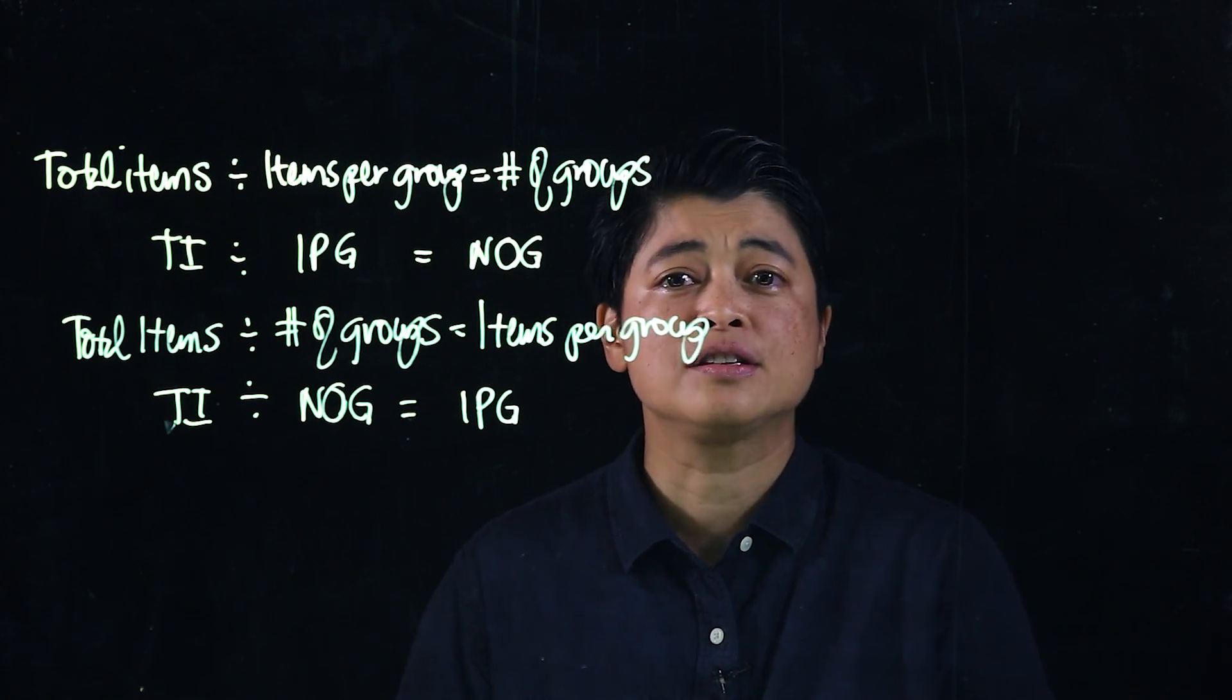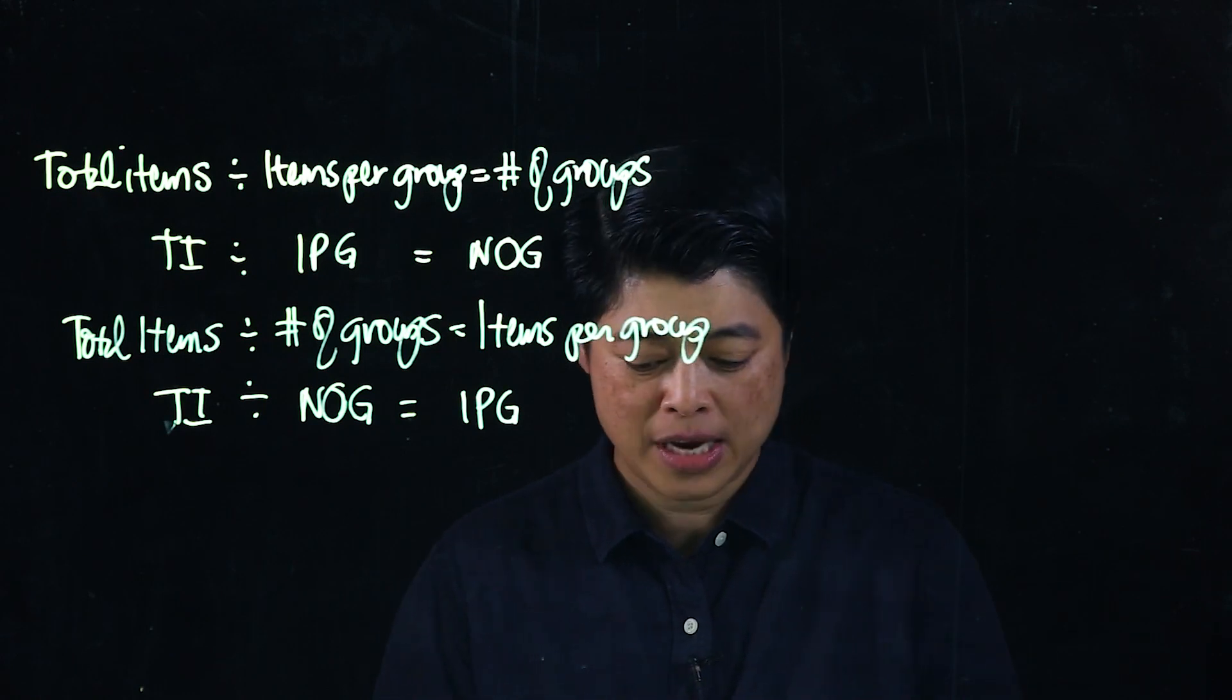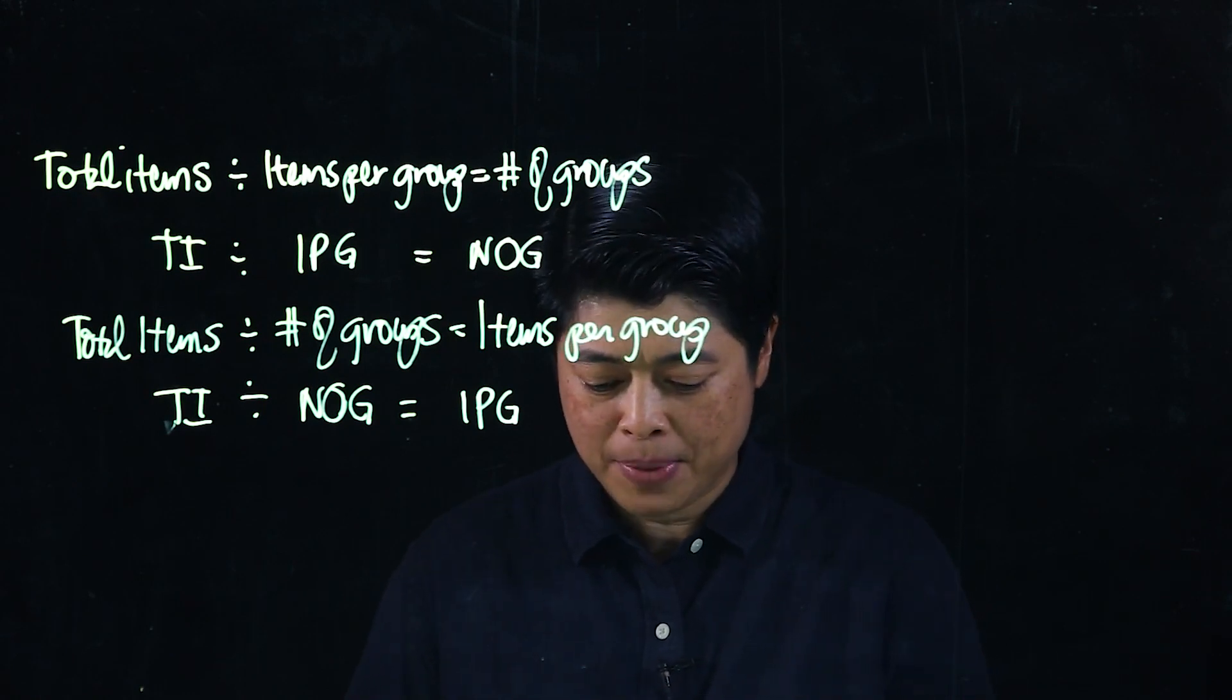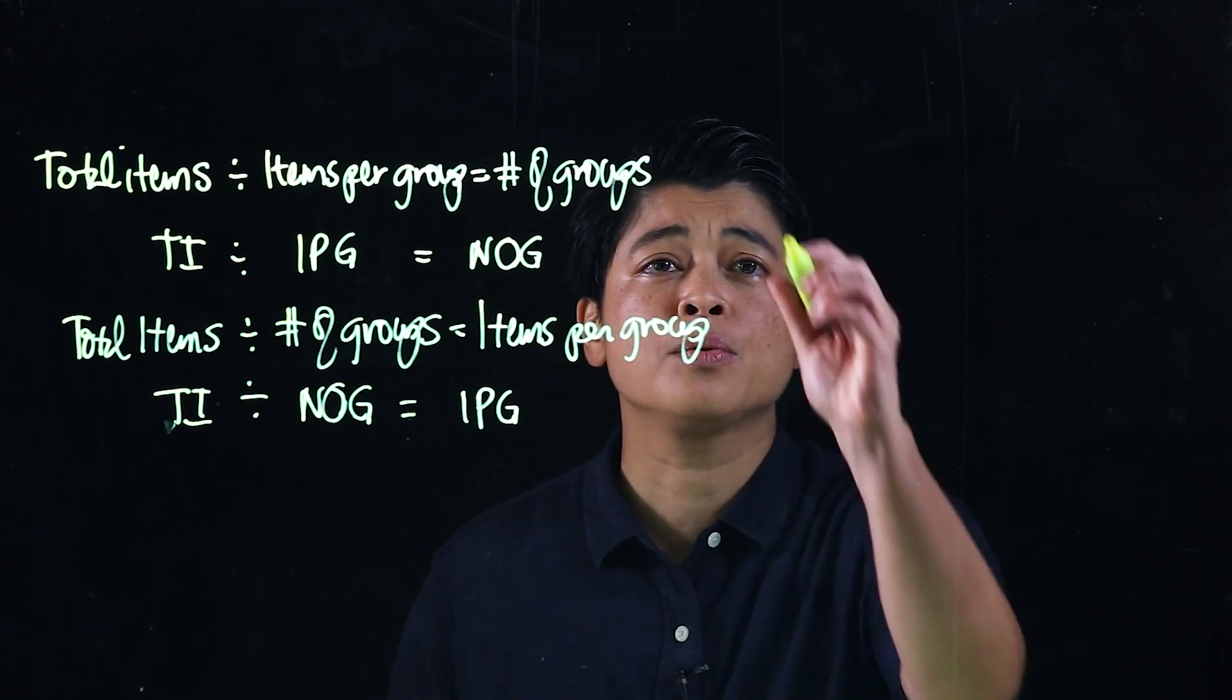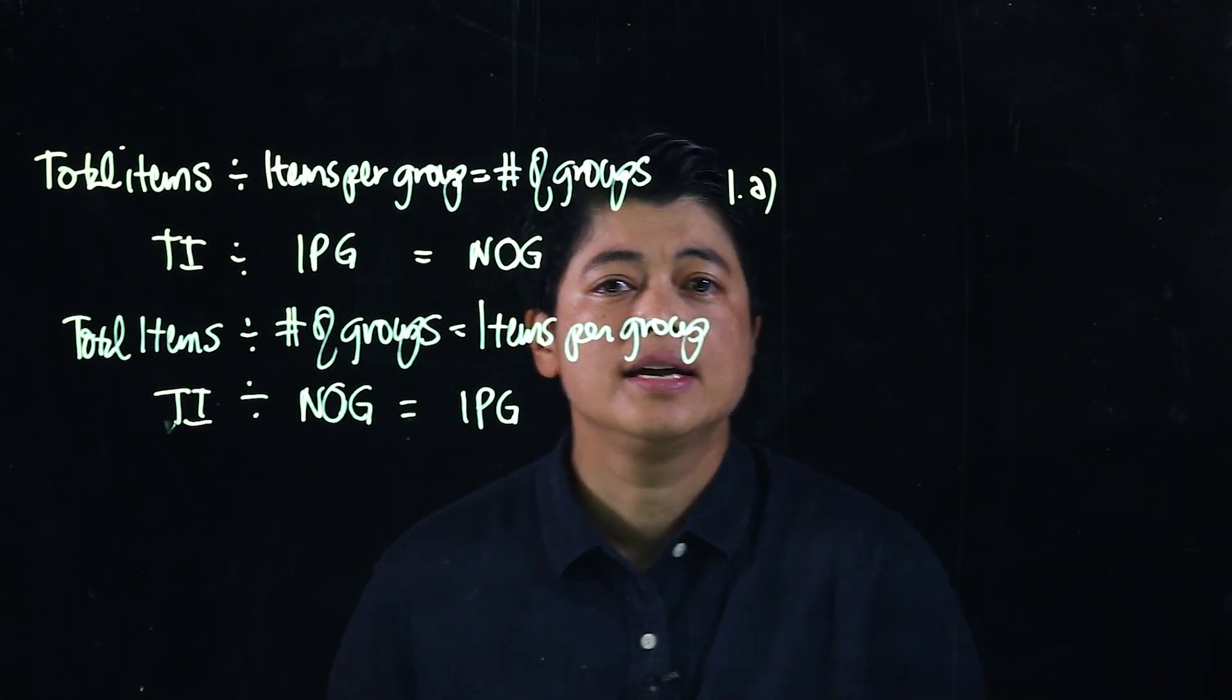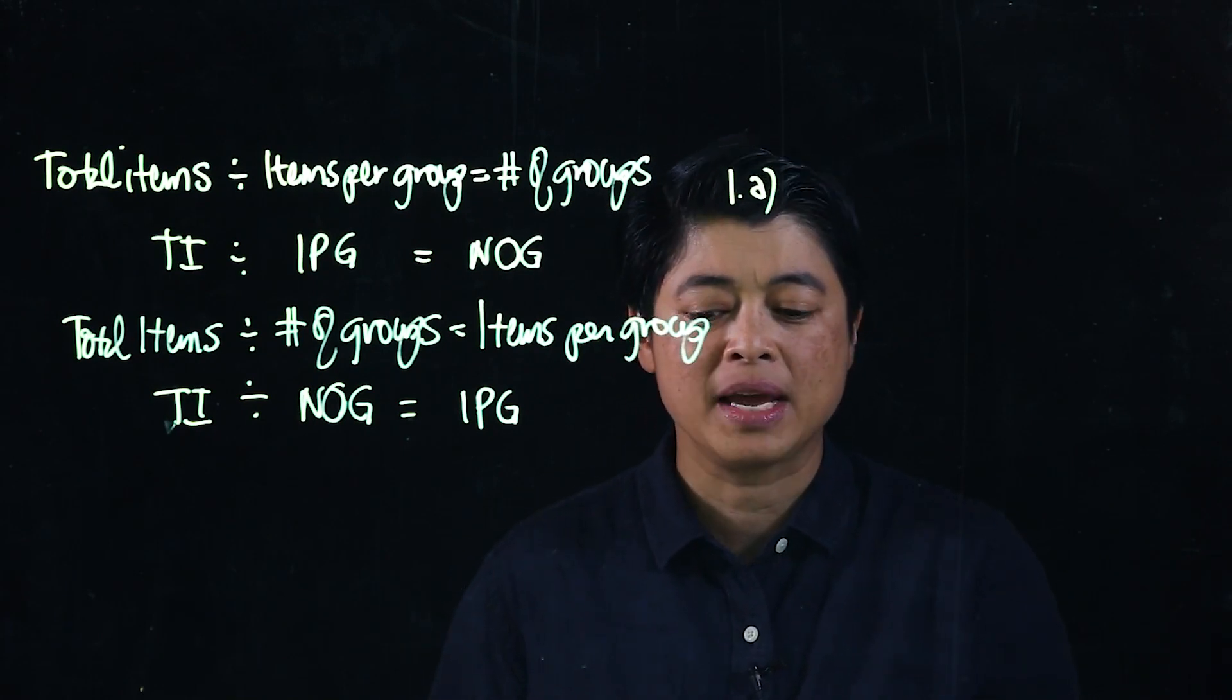So our exercises for today comes from page 82. On page 82 in letter number one, letter A, it says Joe takes 18 cat biscuits from a letter. He shares the biscuits equally among his three cats.